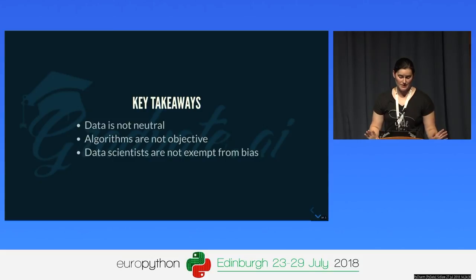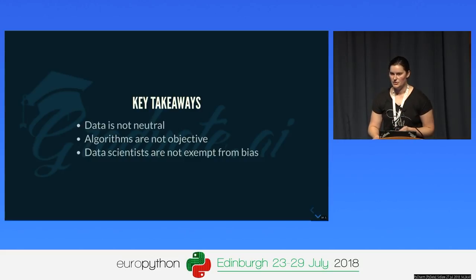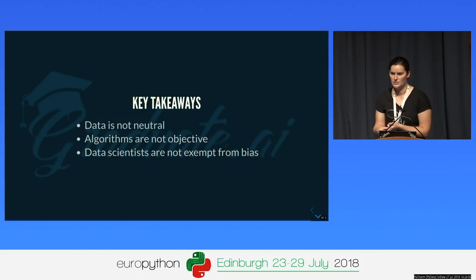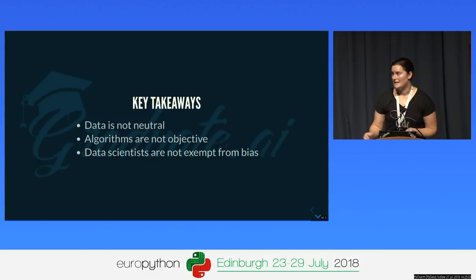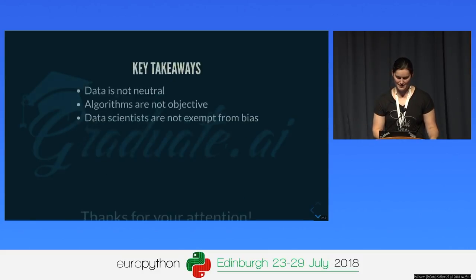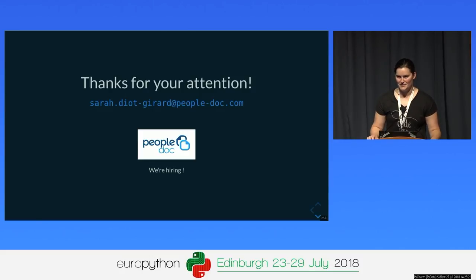To wrap it up, a few takeaways. First: data is not neutral. Data collection involves a lot of conscious and unconscious choices, and these choices can and should be challenged. Second: algorithms may seem objective because they're mathematical functions, but they're learning from biased data and being tuned by biased humans — so they're not fairer or more objective than humans would be. And last: data scientists are only human, and we should keep that in mind and try to reduce bias in our algorithms.